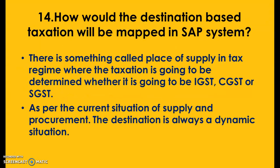How will destination-based taxation be mapped in the SAP system? There is something called a place of supply in the tax regime, where taxation is determined as to whether it is going to be IGST, CGST, or SGST. As per the current situation of supply and procurement, the destination is always a dynamic situation.